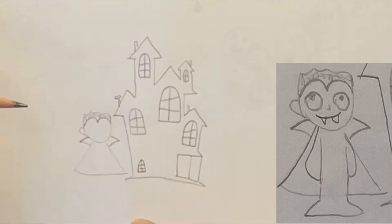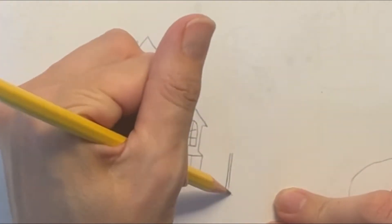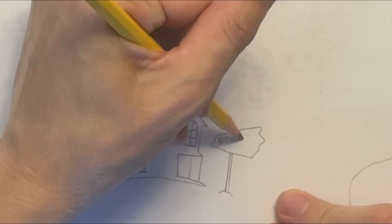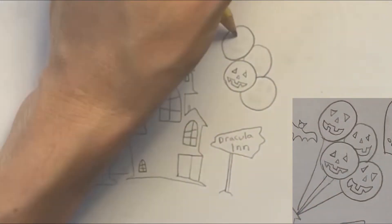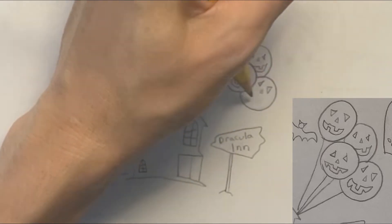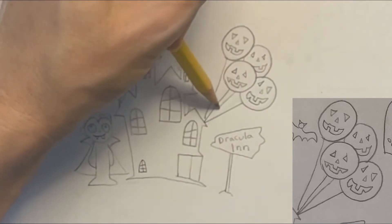Now I'm drawing Dracula standing next to the house, and I'm making a sign next to the house that says Dracula Inn. For an added decoration, I'm adding some jack-o'-lantern balloons that are attached to this side of the house.